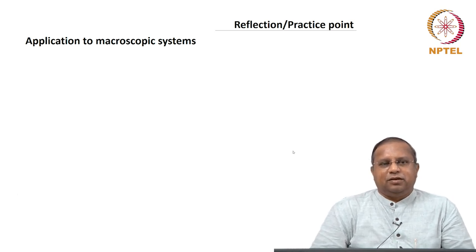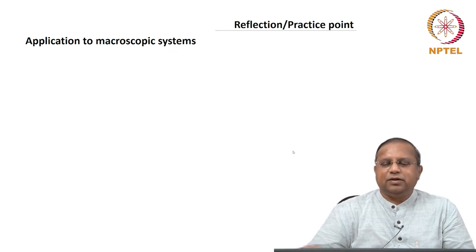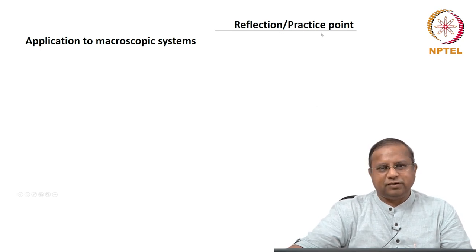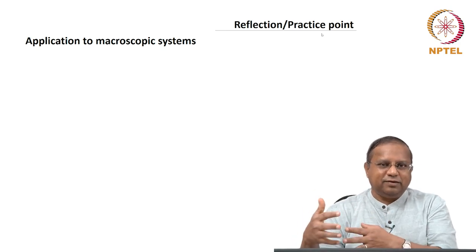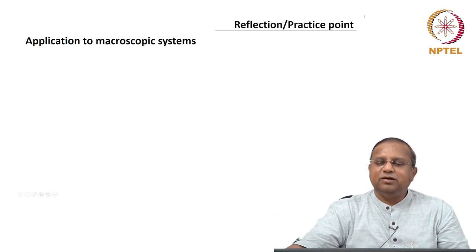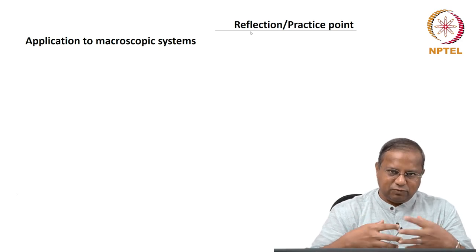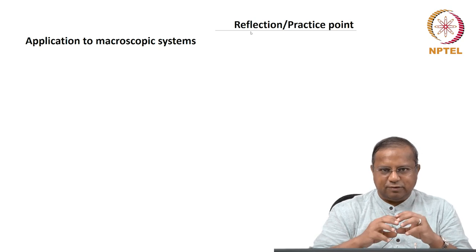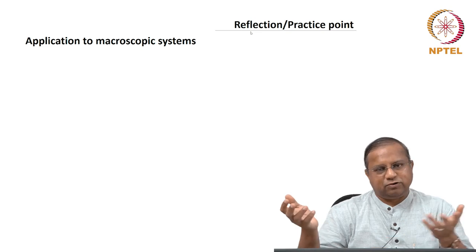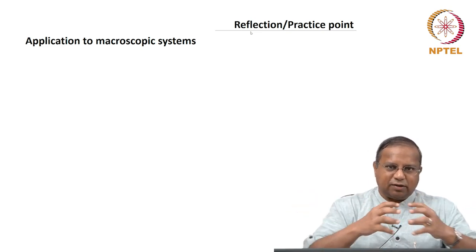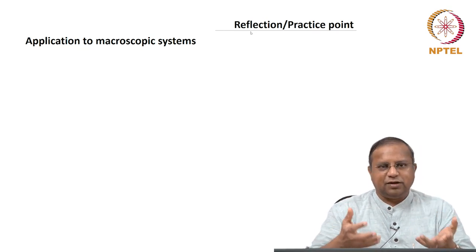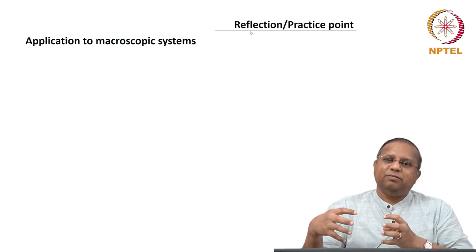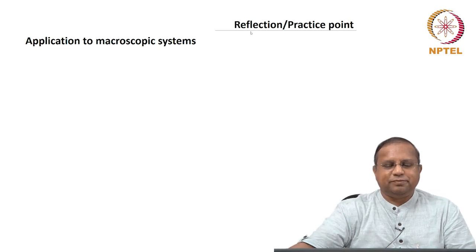We are going to apply this principle to a macroscopic system. I will call this a reflection point or a practice point — these are points where you strengthen your understanding, do a bit of calculation, or think about something. We are going to apply the useful form of the material balance: mass can neither be created nor destroyed, so we use that over a system undergoing a process to get it into a form that is useful to us — meaning expressed in terms of quantities that can be measured.